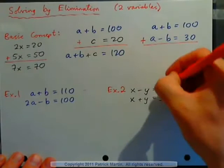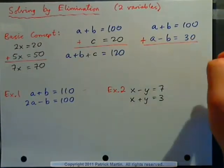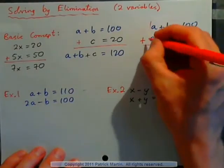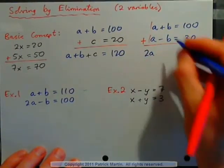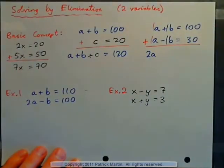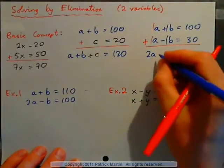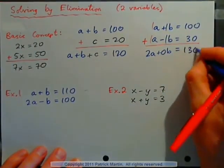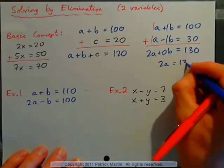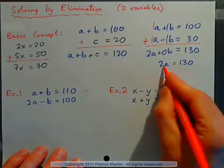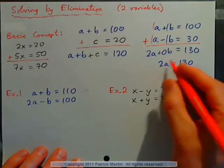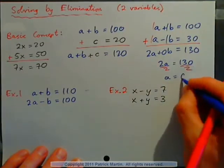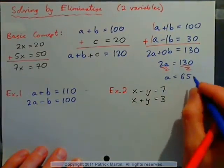I'm going to add the left-hand side of the equations together and add the right-hand side of the equations together. If I add the left-hand side, one apple plus one apple gives me two apples. One banana minus one banana gives zero bananas. Equals 100 plus 30, which is 130. So I have two apples equals 130, meaning I have one equation with one variable. I can solve this: a equals 130 divided by 2, which is 65. So a is 65 cents.